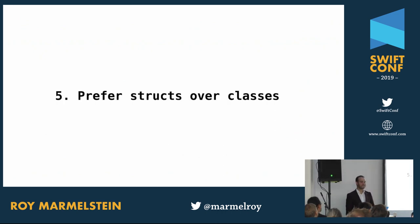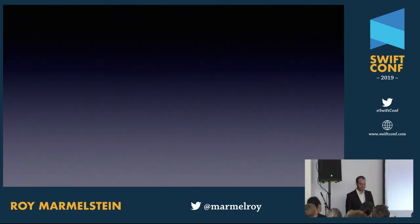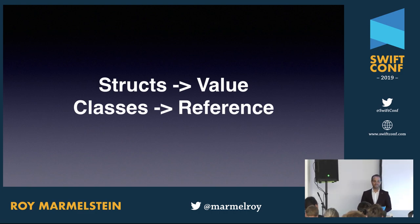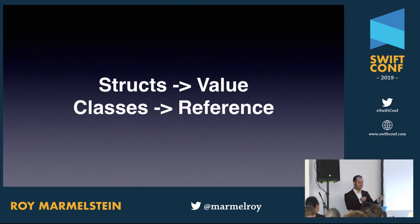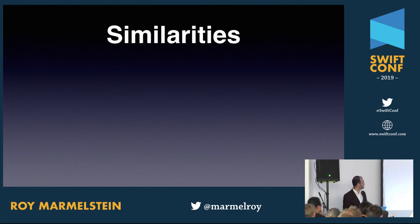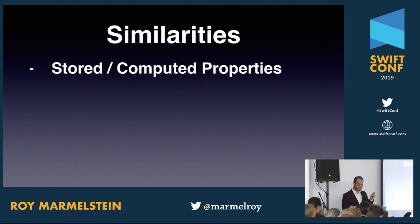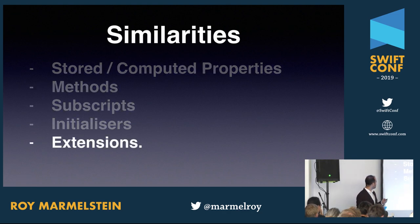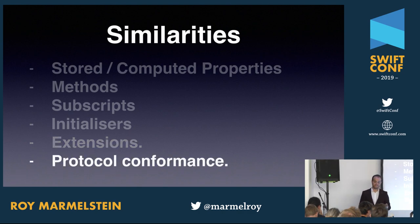The fifth rule: preferring structs over classes. Structs are value types — they get copied around your app. Classes are reference types — a pointer to the class gets moved around. In Swift, unlike other languages, there are a lot of similarities: both can have stored and computed properties, methods, subscripts, initializers, extensions, and protocol conformances for sharing behavior.